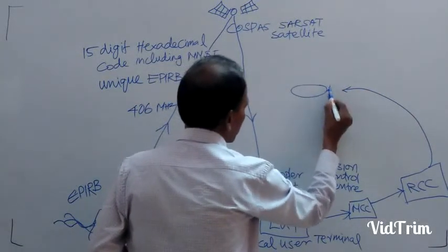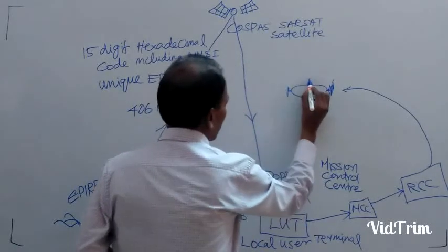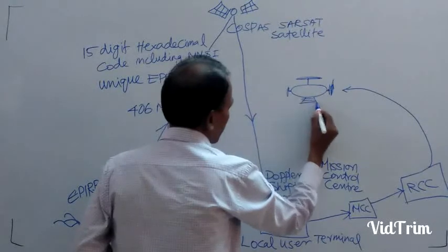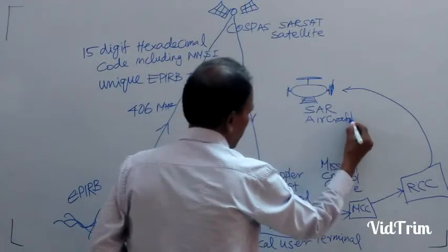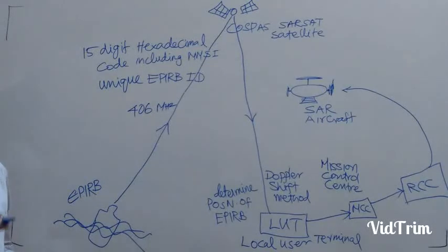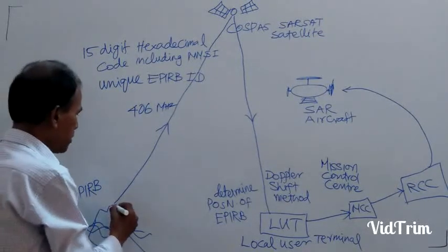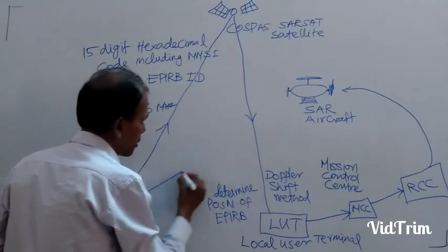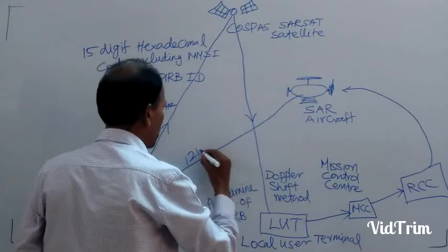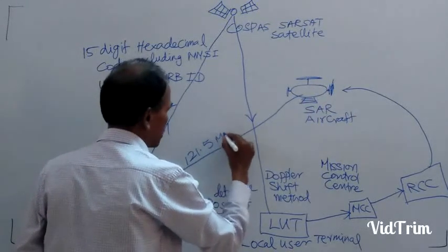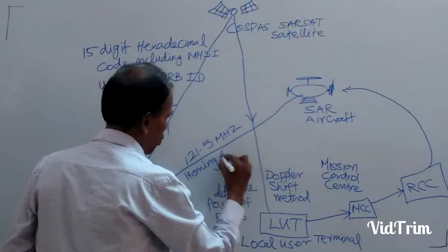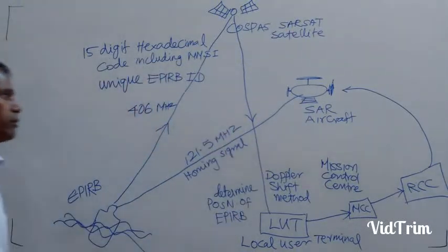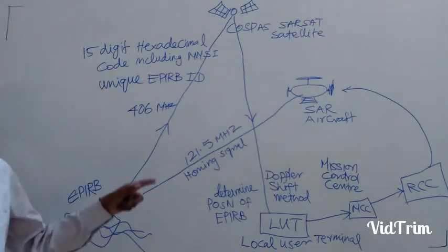That information is relayed to the RCC, and RCC will send the Search and Rescue team, Search and Rescue aircraft. They immediately provide the Search and Rescue operation. EPIRB is transmitting another frequency, that is on 121.5 MHz, and on that, homing signal is transmitted.